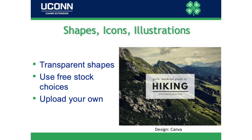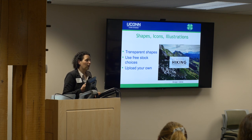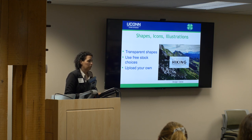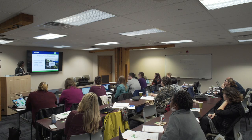Shapes, icons, and illustrations can help take the viewer's eye to the key point. Here's an example from Canva where they use a transparent rectangle to bring the font and key message forward in the design. You can upload your own, use the free stock choices, or pay the dollar for whatever shape, icon, or illustration you want. There are over two million different photos in Canva. You can also do a Google image search and search for 'reuse with modification.'